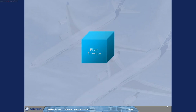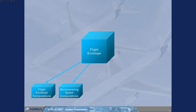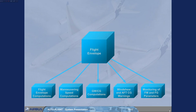The flight envelope part of the FMGS provides: flight envelope computations — for example, minimum speeds such as VLS, or maximum speeds such as VMO or VFE. Maneuvering speed computations — the best speed to fly at in a given flap configuration. Backup gross weight and center of gravity computations. Wind shear and aft CG warnings. And flight management and flight guidance parameter monitoring. Note: the flight control computers also process some flight envelope speeds and control many flight envelope functions, such as protections. You will learn more about this in the flight controls chapter.